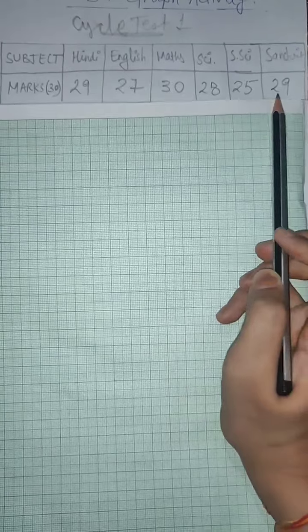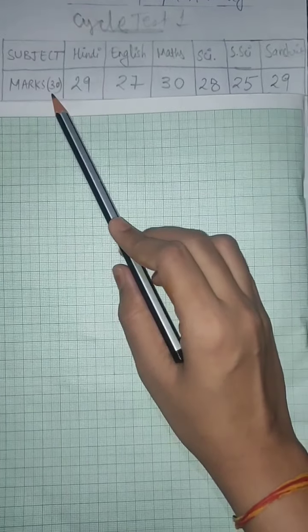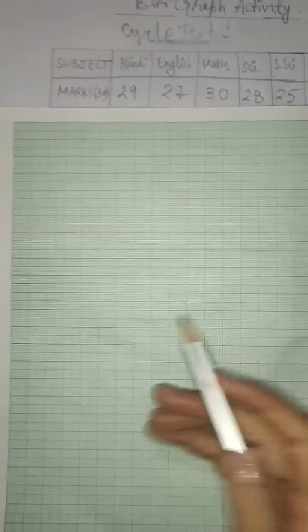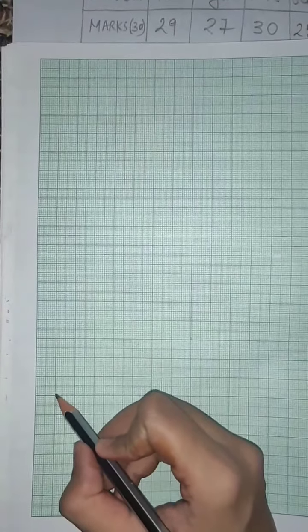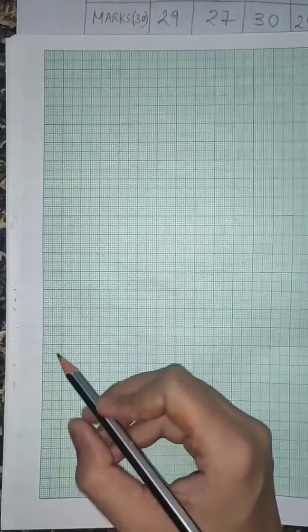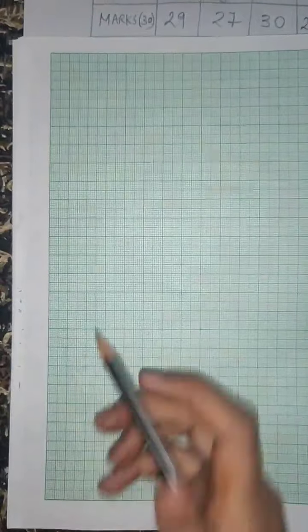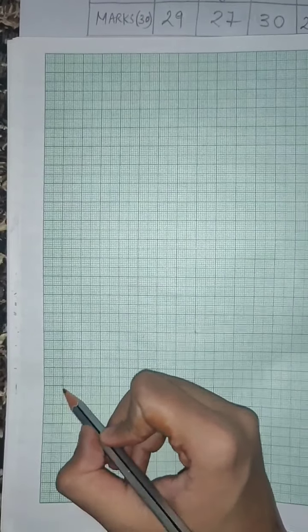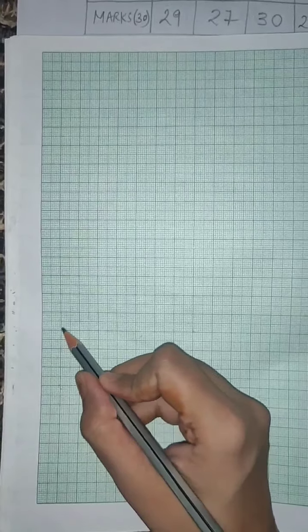Now let's look at scale. The maximum value is 30 because your cycle test had 30 marks. So what can we do here? If we scale at 5, we can get 30. If there is 0, then 5, 10, 15, 20, 25, 30.